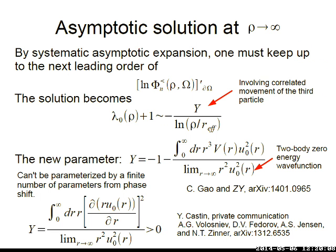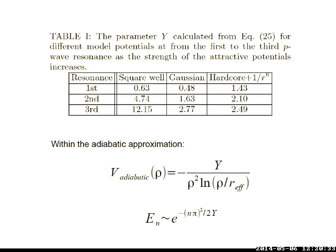It was pointed out by our Danish colleagues that Y can be expressed in a manifestly positive form, confirming the adiabatic potential is attractive. One can calculate Y for different potentials at different P-wave resonances — square well, Gaussian, and hollow core plus Van der Waals tail — and the value of Y increases as one goes to deeper resonances. Now, when one adds the diagonal correction Q to the adiabatic potential, the leading 1/log term cancels, and the remaining leading term for the effective potential must go like 1/log-squared. So it seems we are getting close to the super Efimov states, but the question is what the coefficient C is. The adiabatic potential part can be calculated analytically, giving a coefficient depending on Y, but the correction term Q cannot be done analytically.